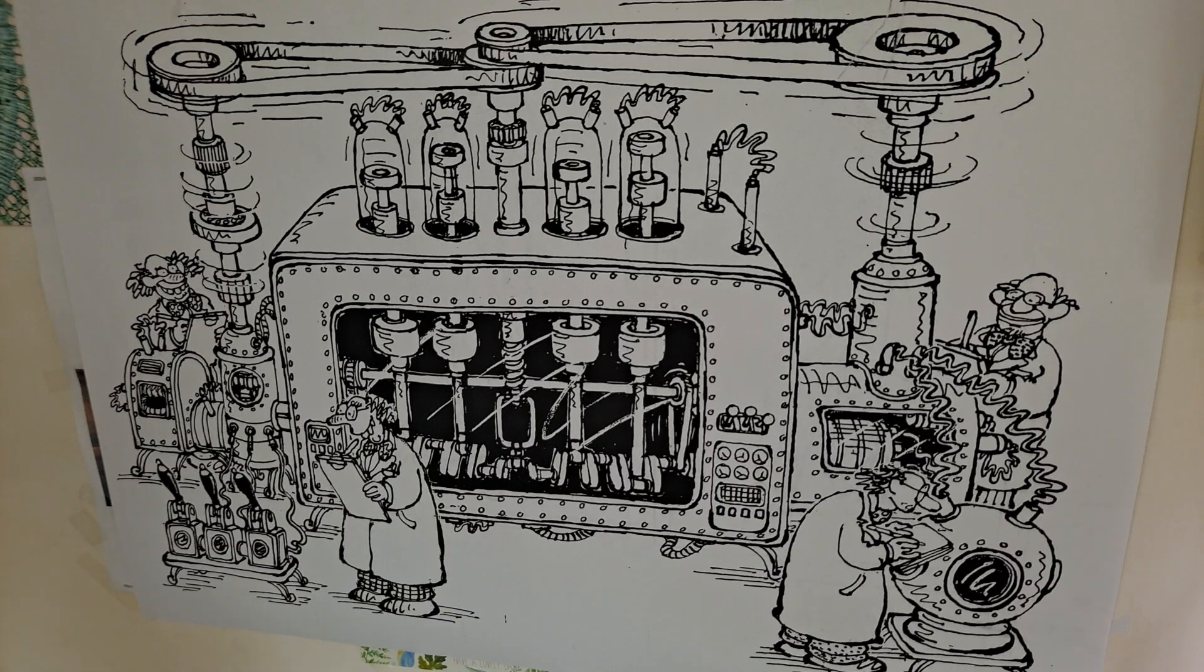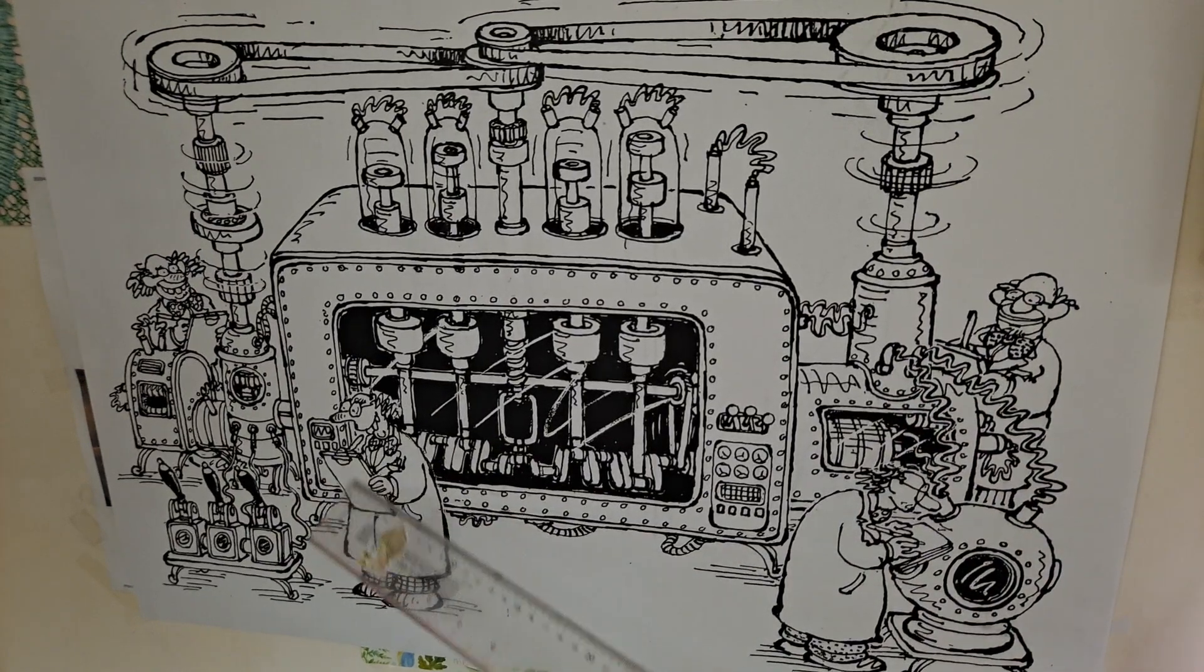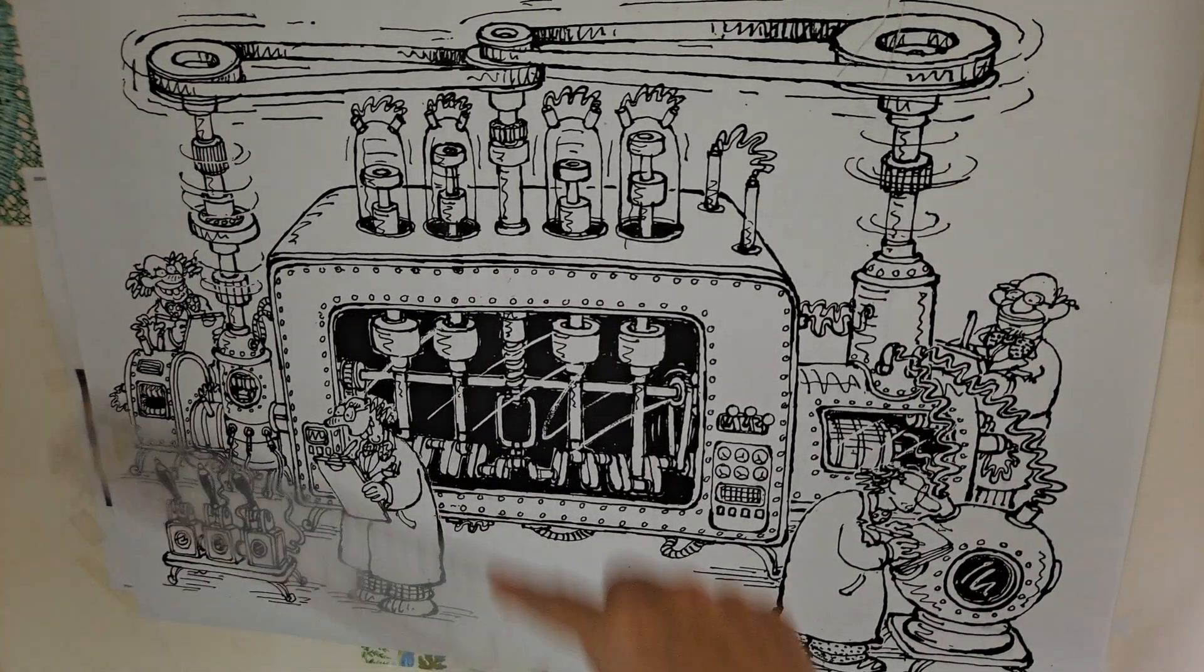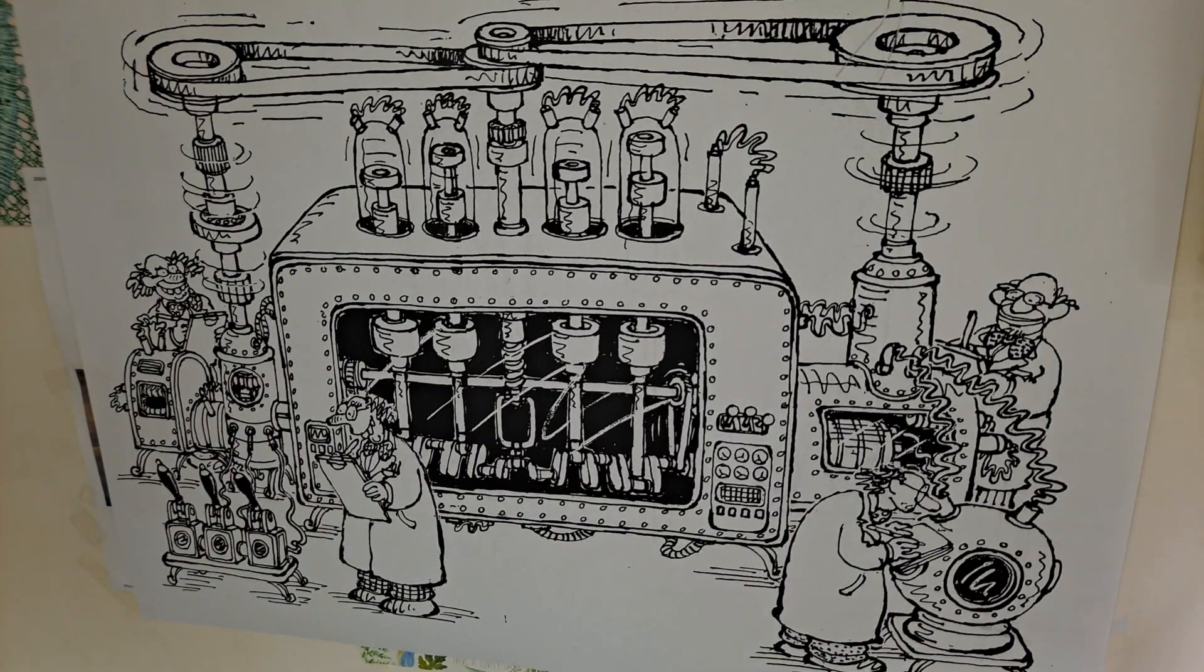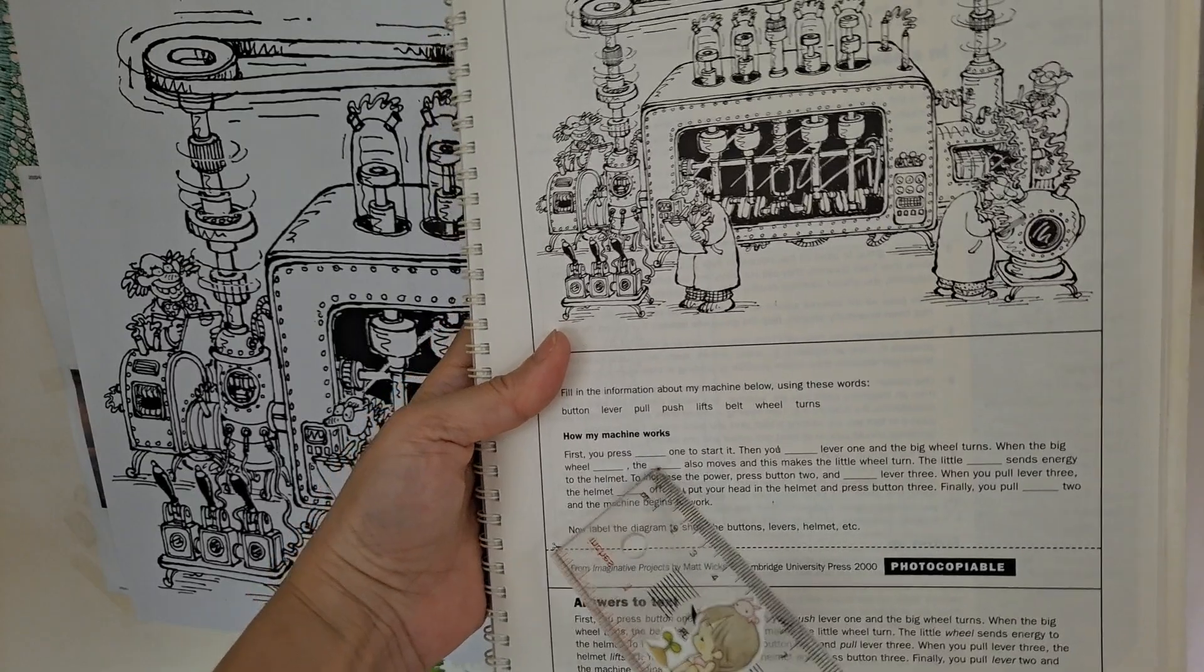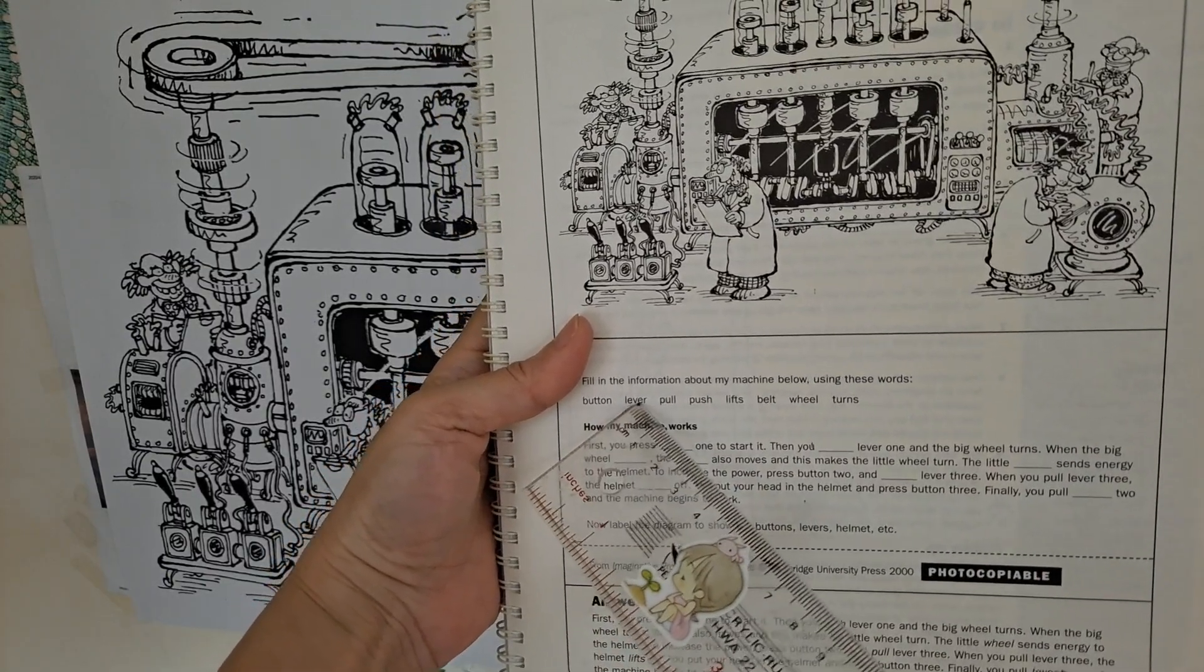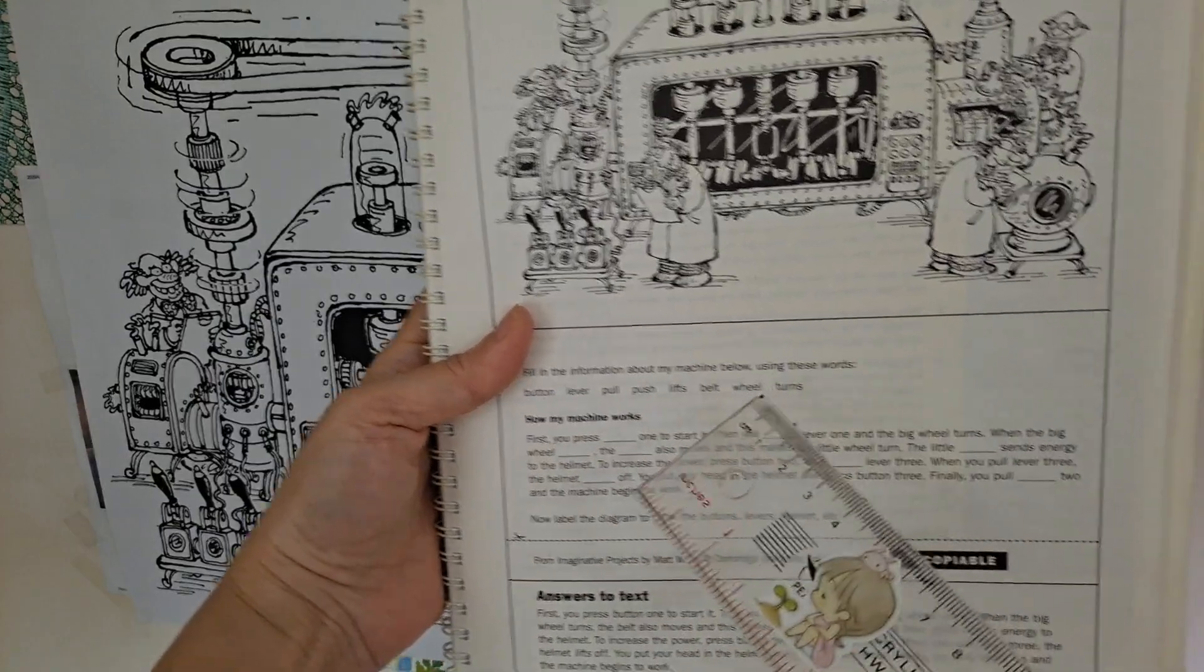So how you can make the machine work? So this researcher is trying to do the records how this machine can be functioned. And you should fill out the blank in this page using the words and the hints on above.